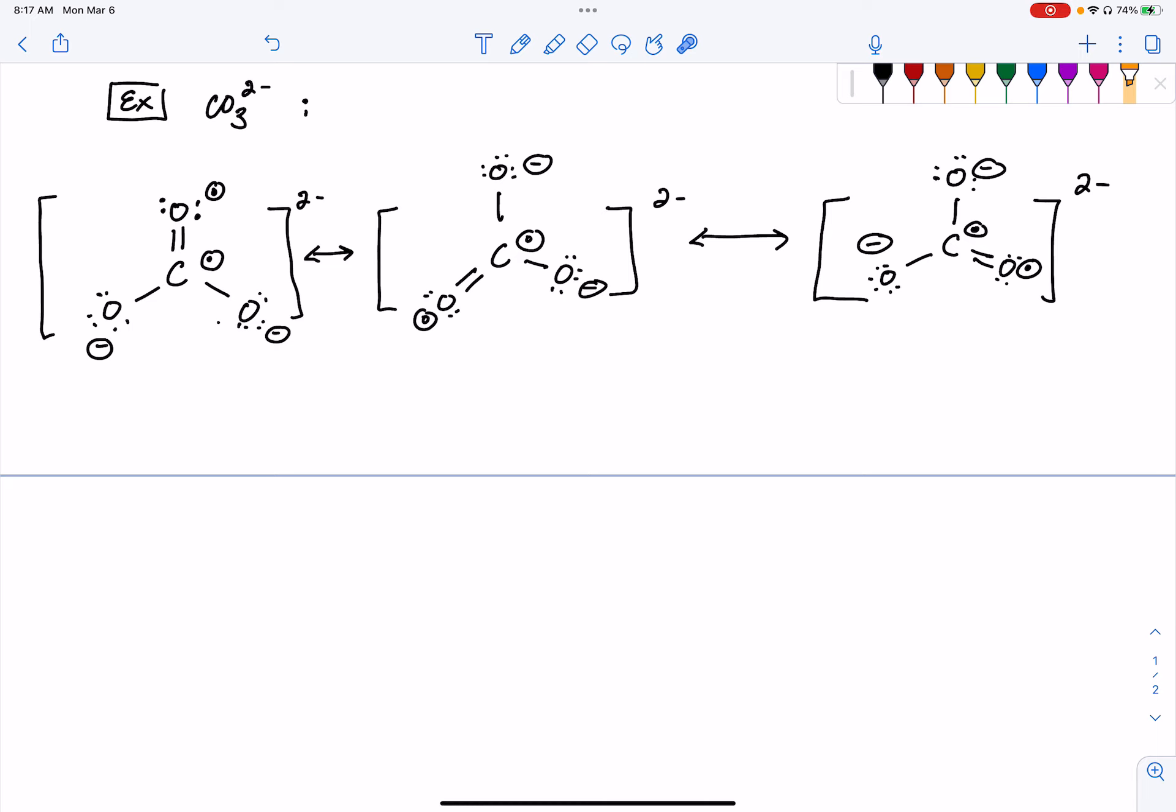But if we had to do an assessment about which one had the maximum number of zero charges, you'll notice that they all have two zero charges, zero formal charges. And if we wanted to figure out which one gave the negative formal charge to the oxygen, well, all of them do.